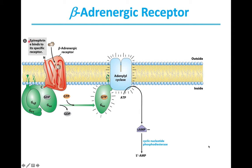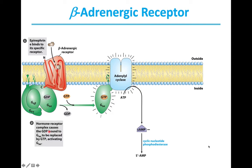The binding of epinephrine, a small molecule, to the beta-adrenergic receptor promotes a conformational change in the receptor's intracellular domain — that is, on the inside of the cell — that affects its interaction with an associated protein, G-protein, shown here in green.